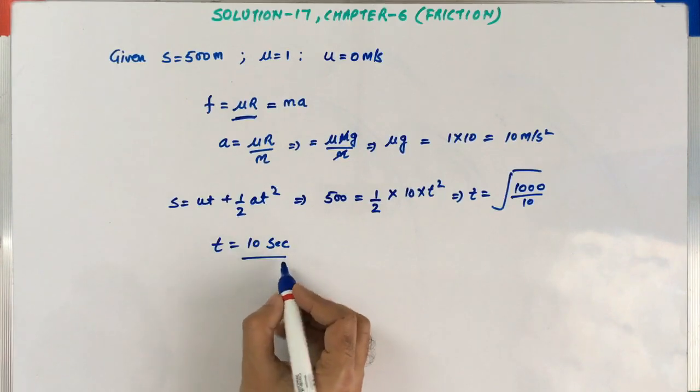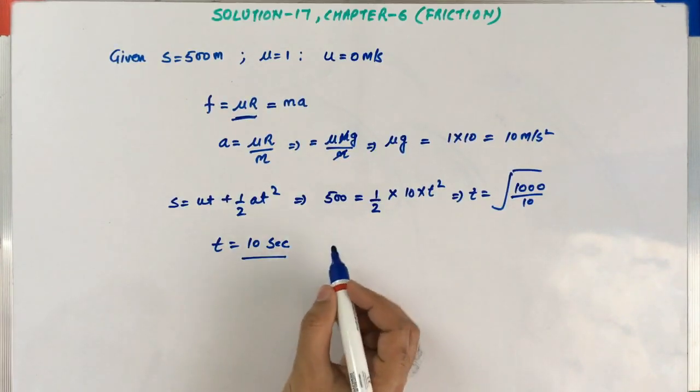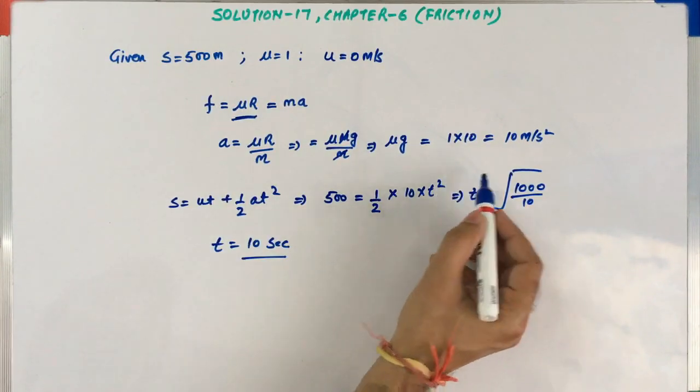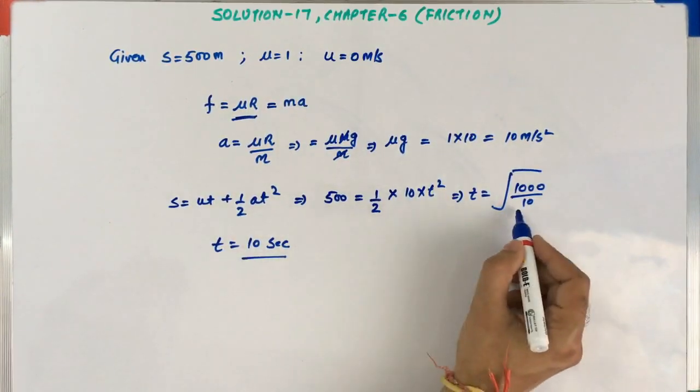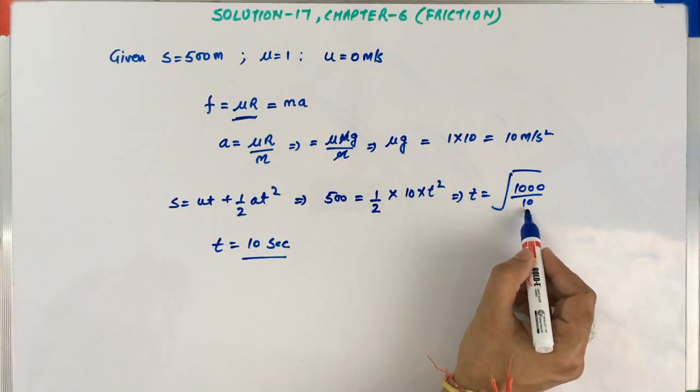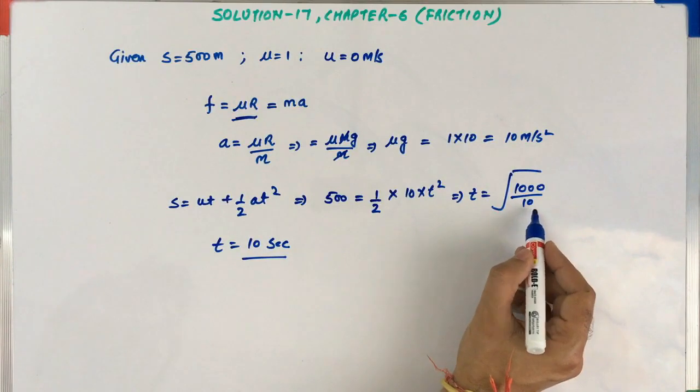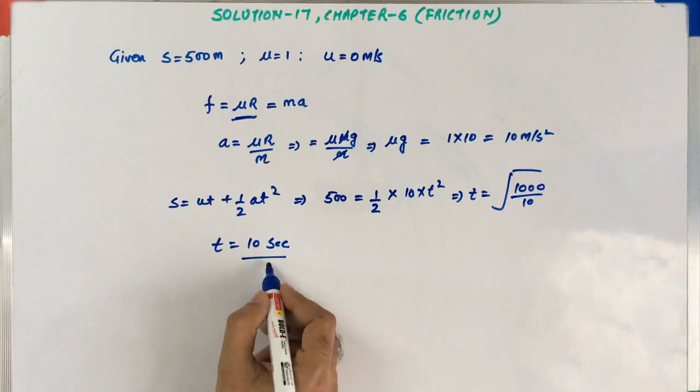We know that acceleration cannot increase beyond 10 meter per second square because if it increases beyond this, the tire will start skidding. From here we can see that time will decrease in the case of increase in acceleration. But acceleration cannot be increased. So that means t cannot be less than 10 seconds. This is the solution of this problem.